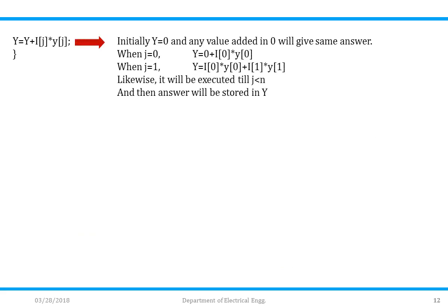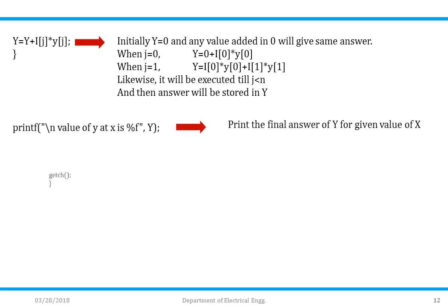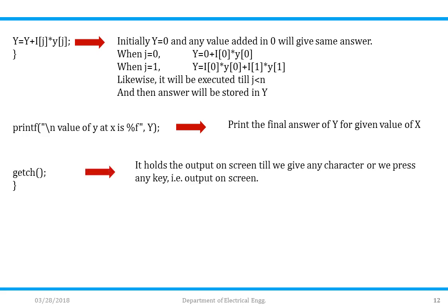Then Y = Y + l[j] × y[j]. Initially Y=0, so when j=0: Y = 0 + l[0]×y[0]. When j=1: Y = l[0]×y[0] + l[1]×y[1]. This continues until j<n, and the final answer is stored in Y. Then printf with newline: "Value of Y at X is %f" — this prints the final answer of Y for the given value of X. getch() holds the output on the screen until we press any key.